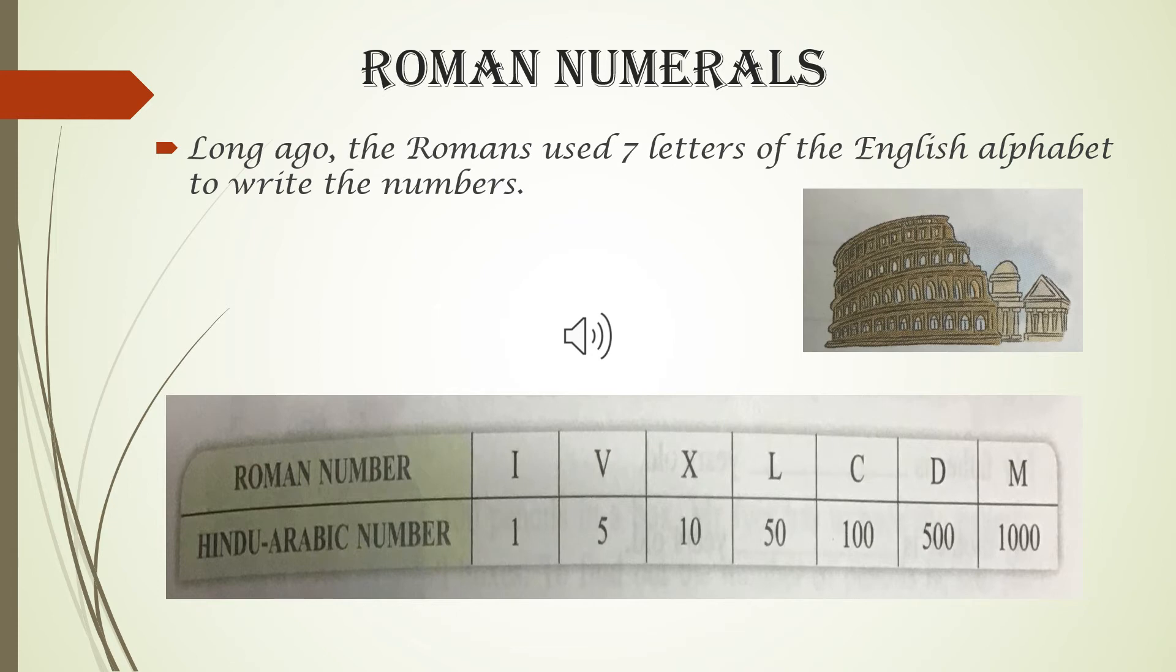1 is denoted as I as Roman numeral, 5 as V, 10 as X, 50 as L, 100 as C, 500 as D, 1000 as M. These are the 7 basic symbols used under Roman numerals.